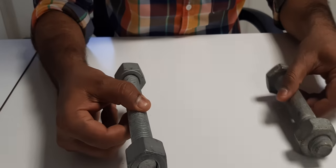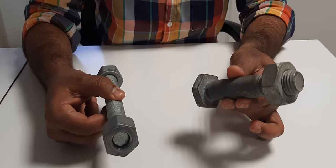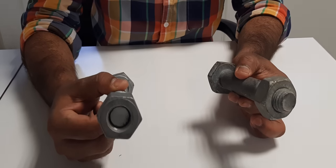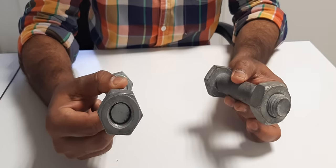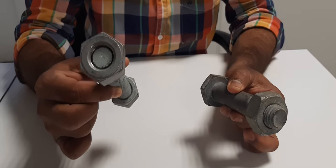Normally bolt is used for heavy structures. And stud is used for piping flange connection or valve. Thank you for watching.